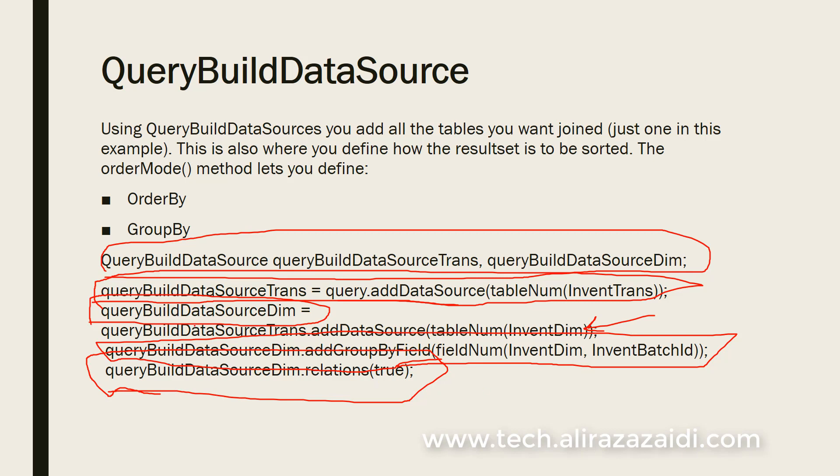Because the transaction table and dimension table have a defined parent foreign key relationship, there will be an inner join between the InventTrans and InventDim tables.